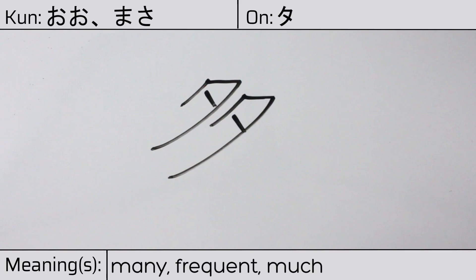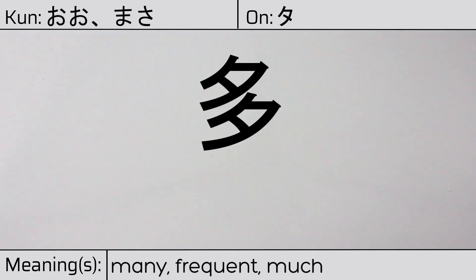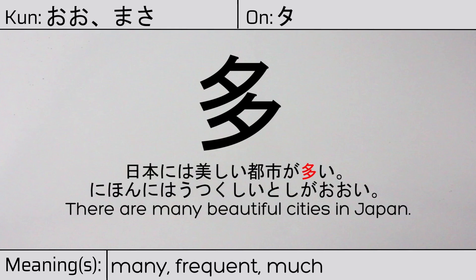This character is made up of the following radicals or parts: evening and sunset. You can remember this kanji by the following hint: evening upon evening means many. Our example sentence is: 日本には美しい都市が多い — There are many beautiful cities in Japan.